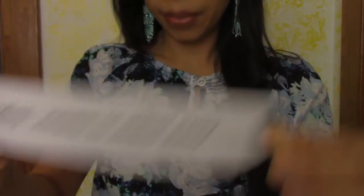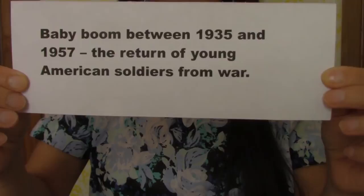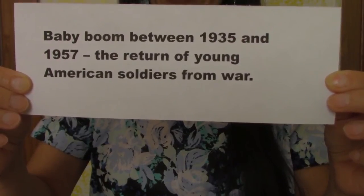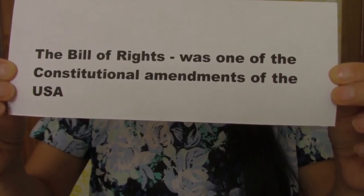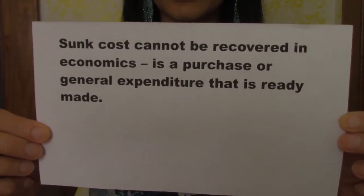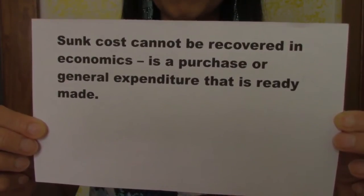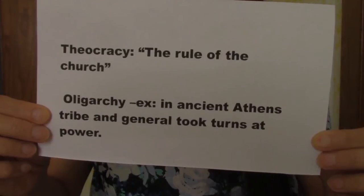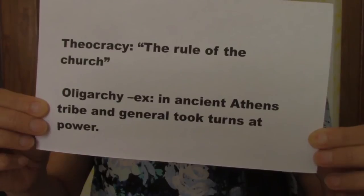Baby boom: between 1935 and 1957, the return of young American soldiers from war. The Bill of Rights was one of the constitutional amendments of the USA. Some costs cannot be recovered in economics — a purchase or general expenditure that is already spent is called a sunk cost. Oligarchy: rule by a select few.